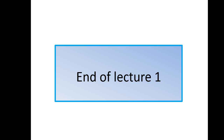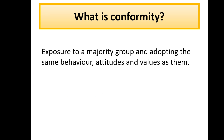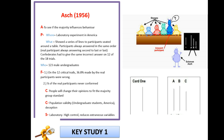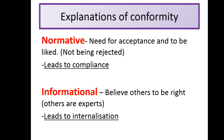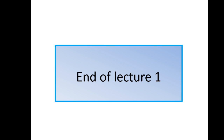That is the end of lecture one. That is all you need to know in terms of what conformity is, types of conformity, and the key research. You need to know Asch like the back of your hands — what he did, what he wanted to do, what he found, his conclusions, criticisms and strengths. You'll see how I've managed to write an essay on this later in the lectures. Make sure you know the two explanations, give examples, and know how normative leads to compliance and how informational leads to internalisation. I'll see you in lecture one A.